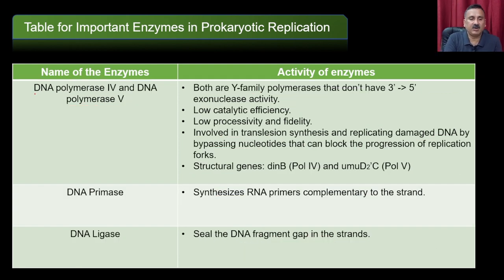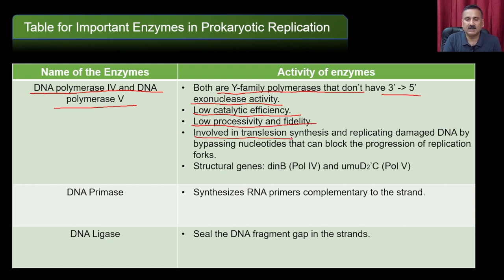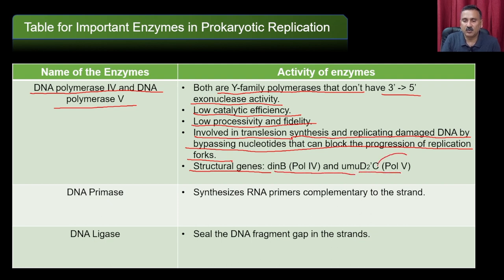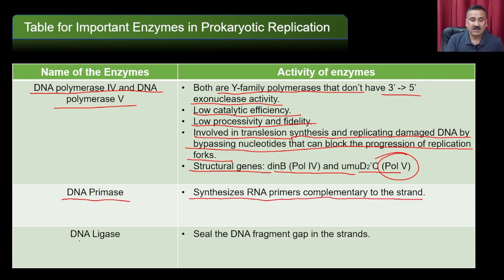DNA Polymerase IV and V are both Y-family polymerases that lack 3' to 5' exonuclease activity. They have low catalytic efficiency, low processivity, and low fidelity. They are involved in translesion synthesis — replicating damaged DNA by bypassing nucleotides that would block a normal replication fork. Their structural genes are DINB (Pol4) and UmuD2C (Pol5). DNA primase is required for synthesis of RNA primers complementary to the template strands. DNA ligase seals gaps in DNA fragments.